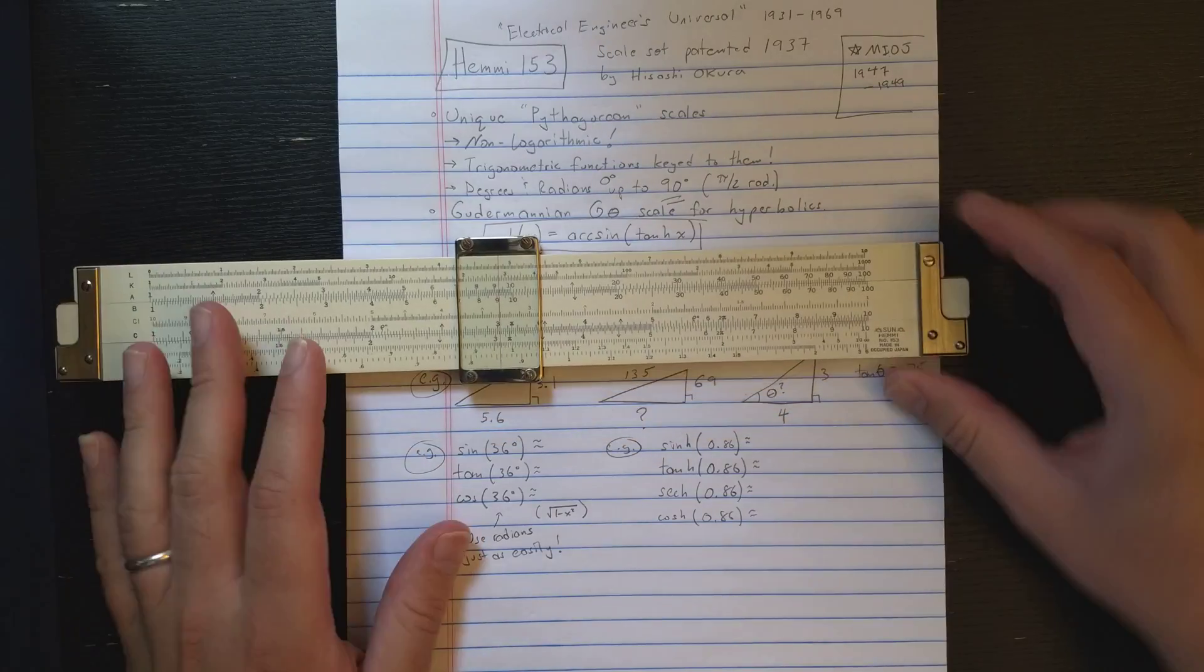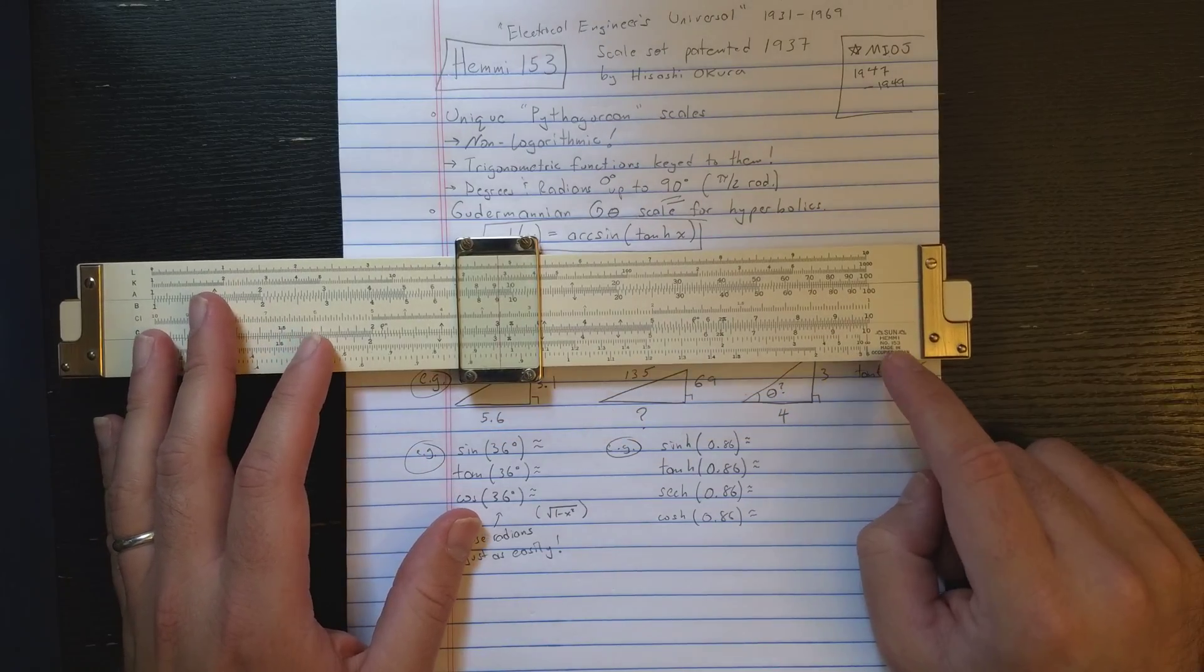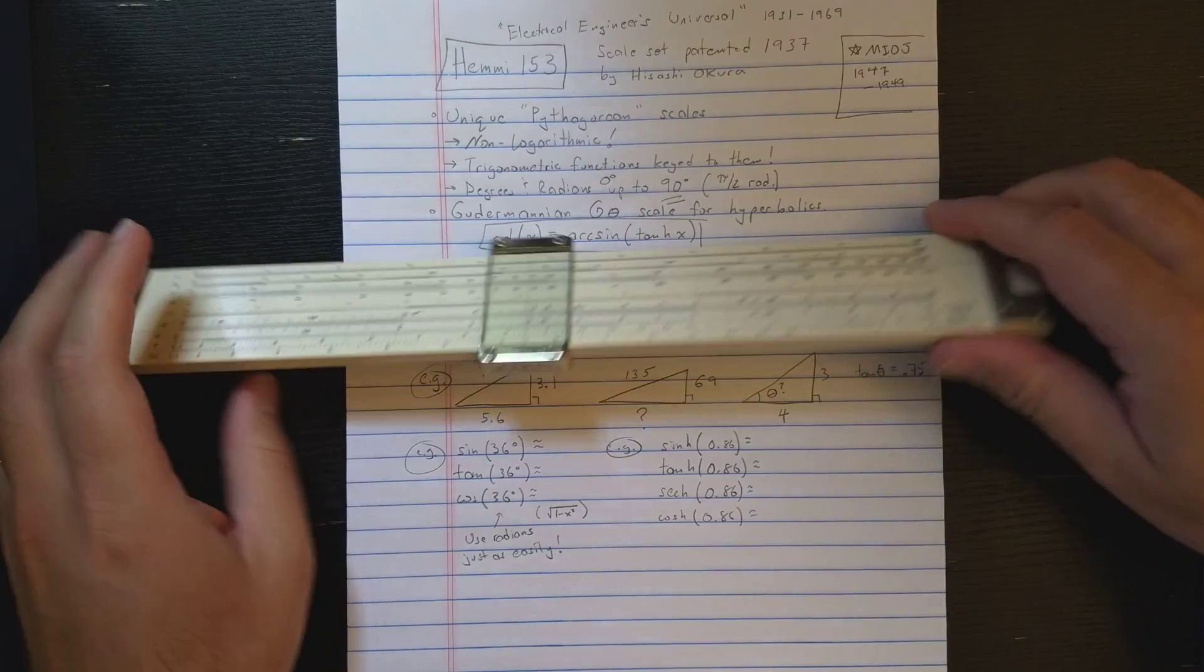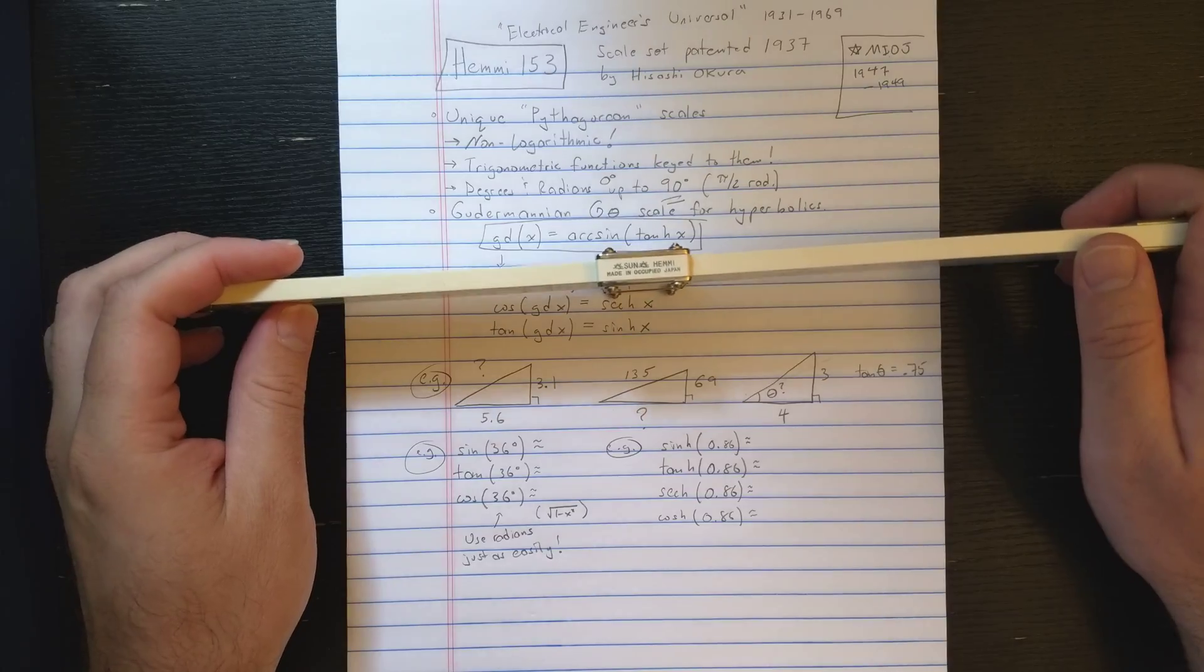This one is marked Made in Occupied Japan, which dates this particular slide roll to between 1947 and 1949. You can see it also says that on the bottom of the cursor.